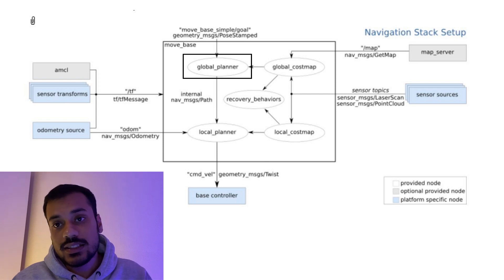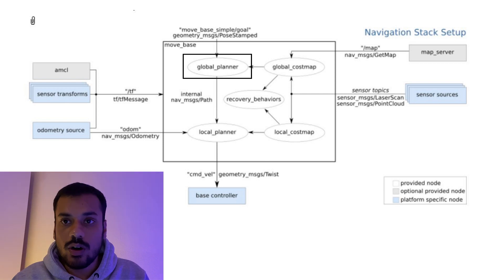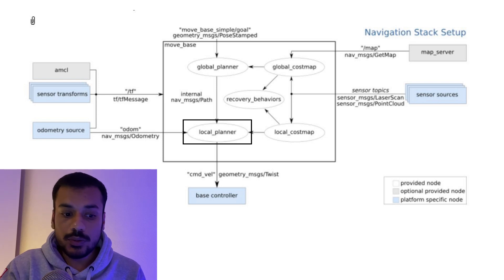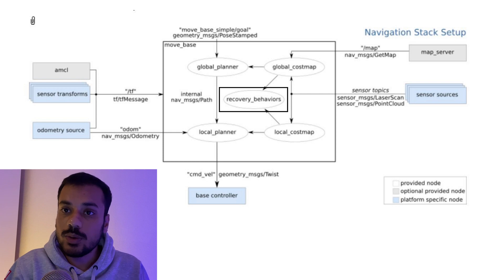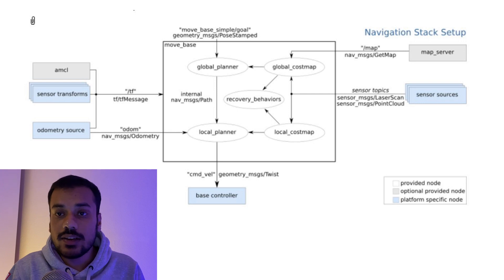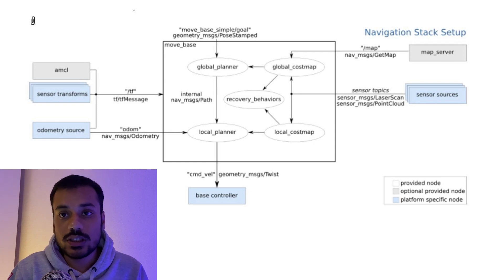Third, the global planner: in the nav stack, the A-star algorithm is used to plan the path from current position to the end goal. It takes in the global map, localization information, and goal pose, and serves only as a high-level or rough guide for the local planner. Fourth, the local planner: this is the actual planner which decides the velocity values of the robot, taking in the local cost map and the global planner's high-level path. Fifth, recovery: these are behaviors used when the robot is stuck or there is a potential failure. In summary, inside MoveBase, global and local planners take in sensor information and cost maps — the global planner gives a high-level path, and the local planner follows it while outputting velocity values.